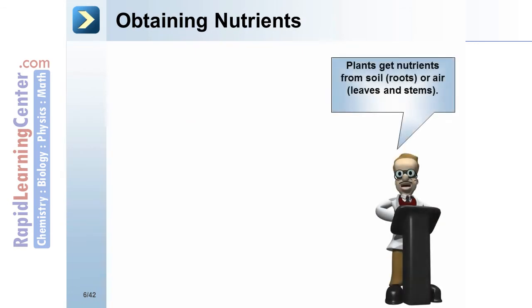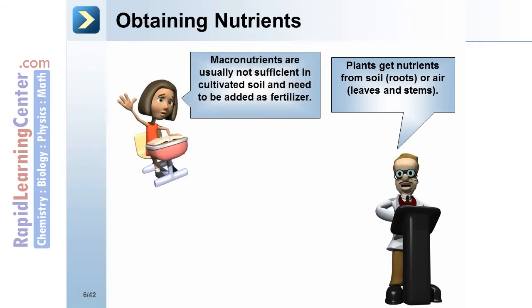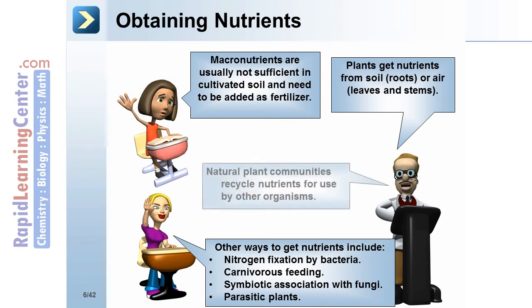Obtaining nutrients. Plants get nutrients from soil via the roots, or from air through their leaves and stems. Macronutrients are usually not sufficient in cultivated soil and need to be added as fertilizer. Other ways to get nutrients include nitrogen fixation by bacteria, carnivorous feeding, symbiotic association with fungi, and parasitic plants.